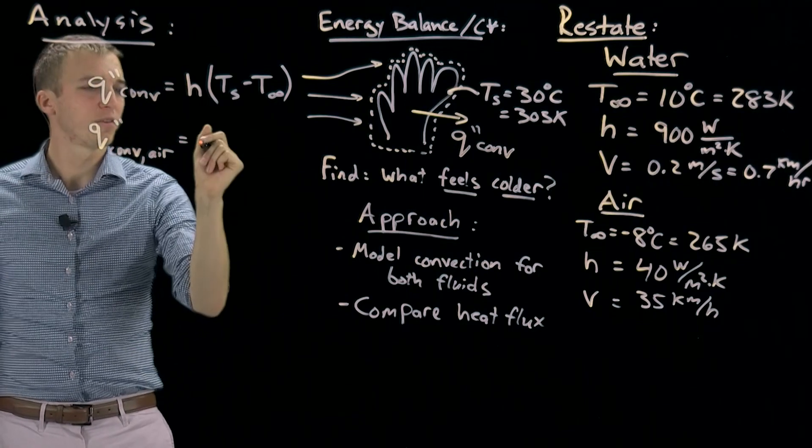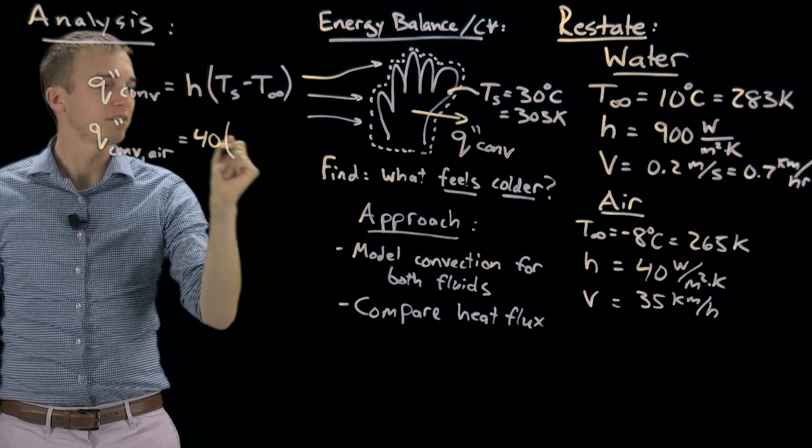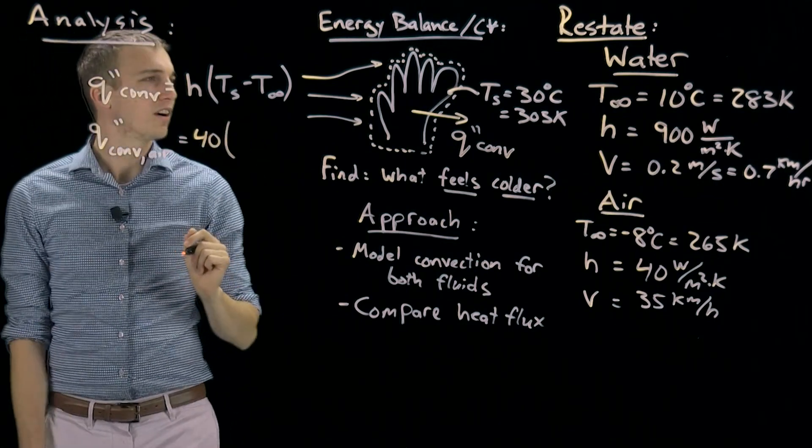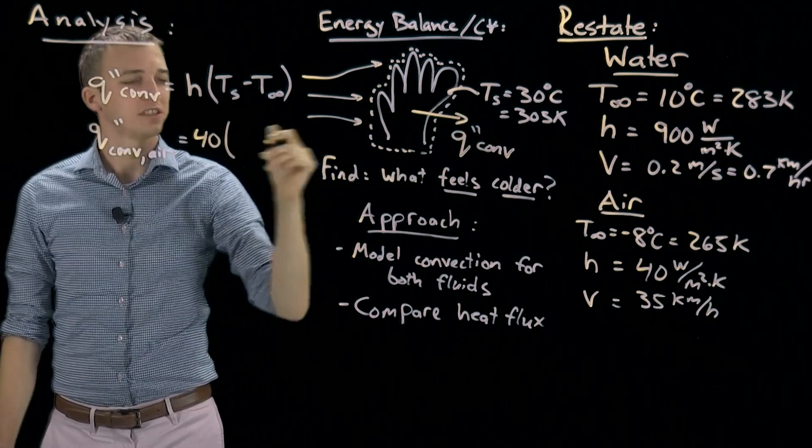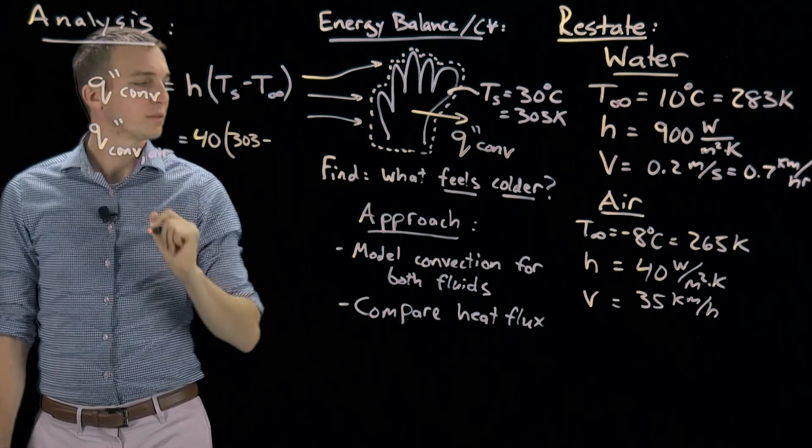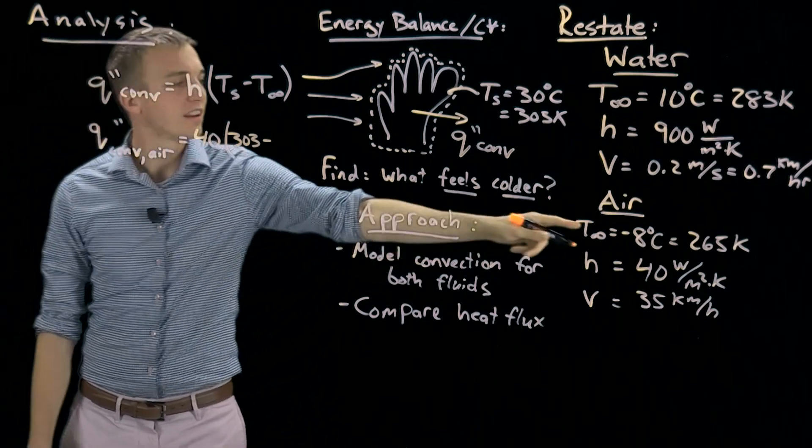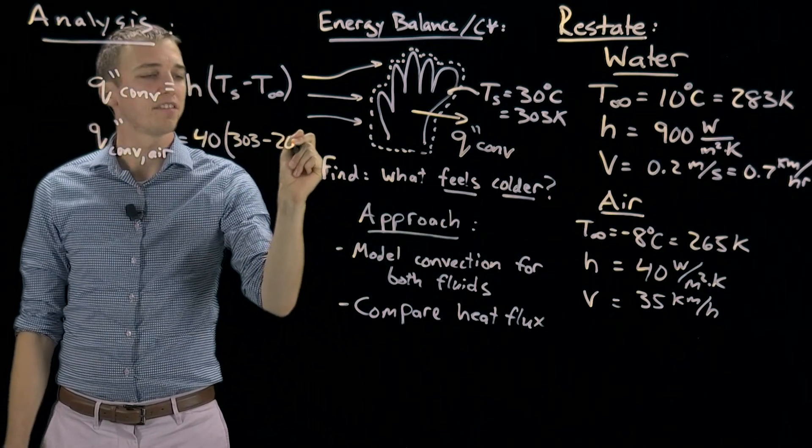So for air, we have 40 watts per meter squared kelvin times our T surface of our hand, which is 303 kelvin, subtracted from our T infinity, which is 265 kelvin.